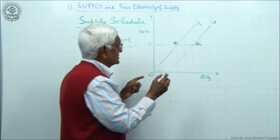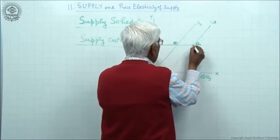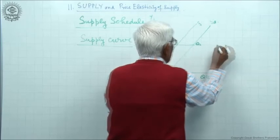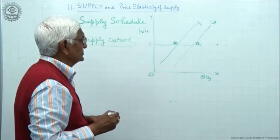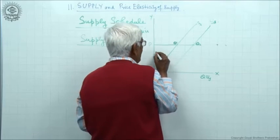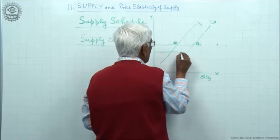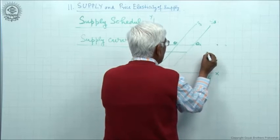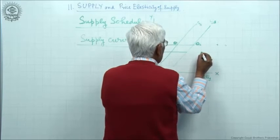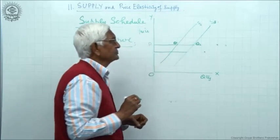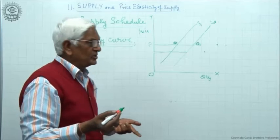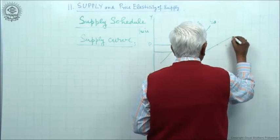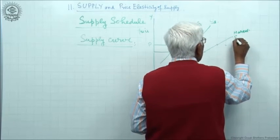If I add this, I get a point. If I add at different price levels, I get multiple points. We require only two points to draw a straight line. Joining these points in a straight line, we get market supply curve.